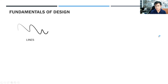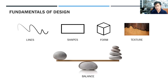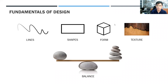So today we'll study about lines, shapes, form, texture, and balance. These elements are not always obviously noticed in designs, but every graphic design is made up of these elements — lines, shapes, form, texture, and balance. We need all of them to exist in our design, and we need to know how to use them.